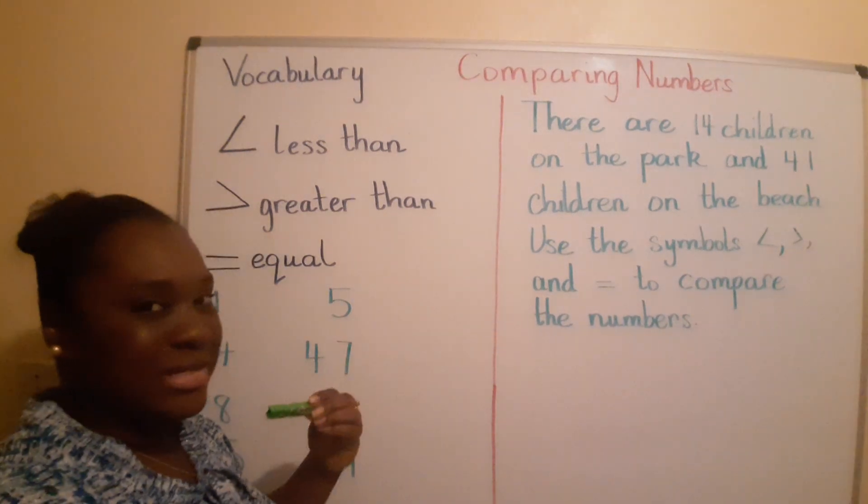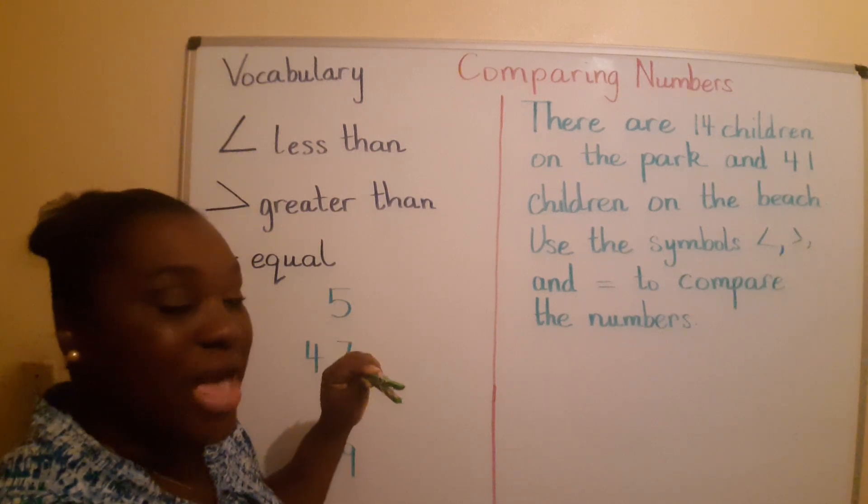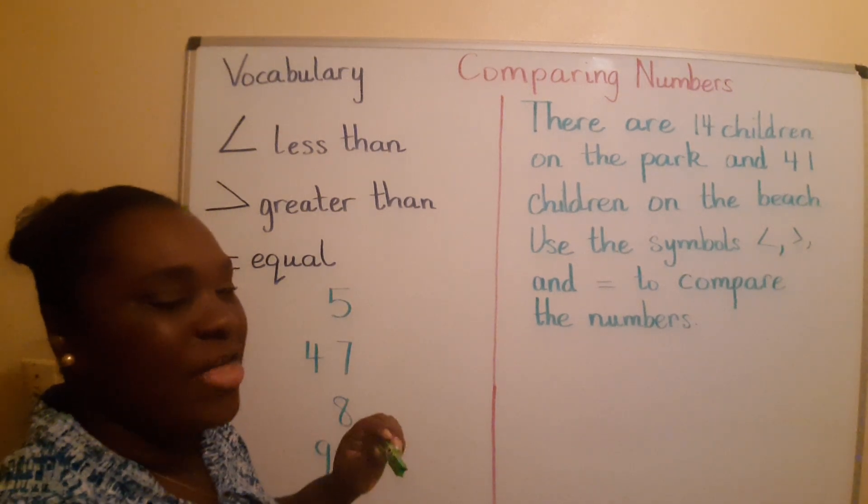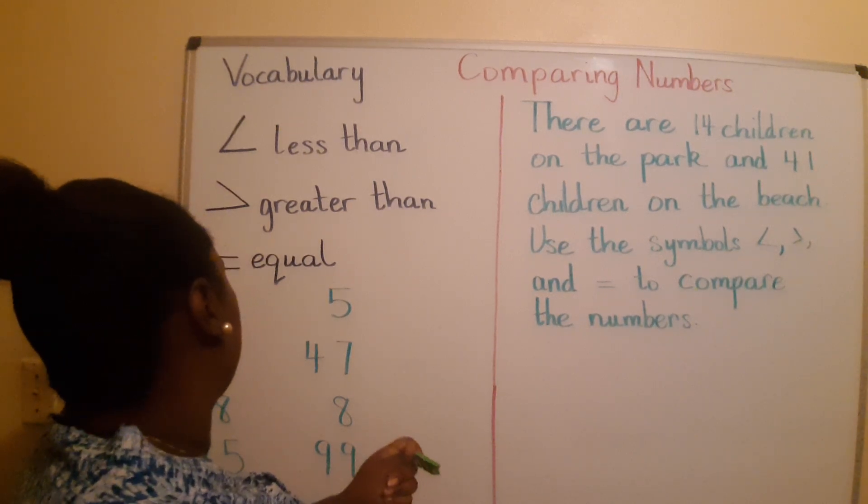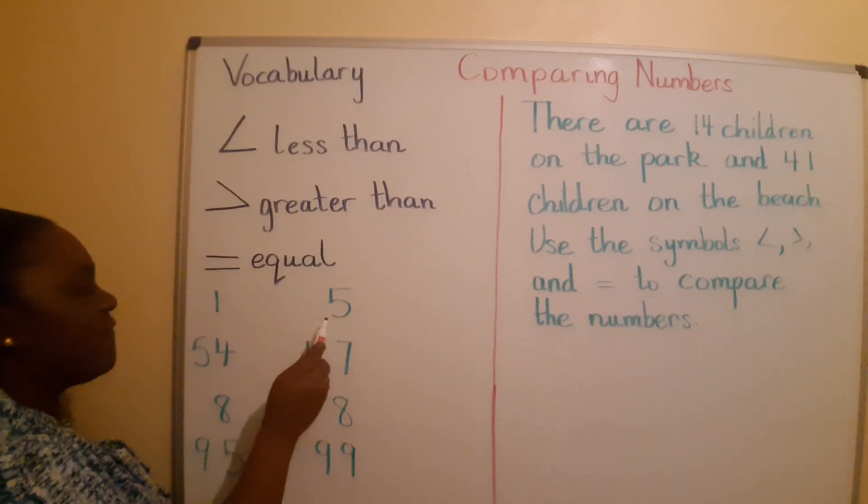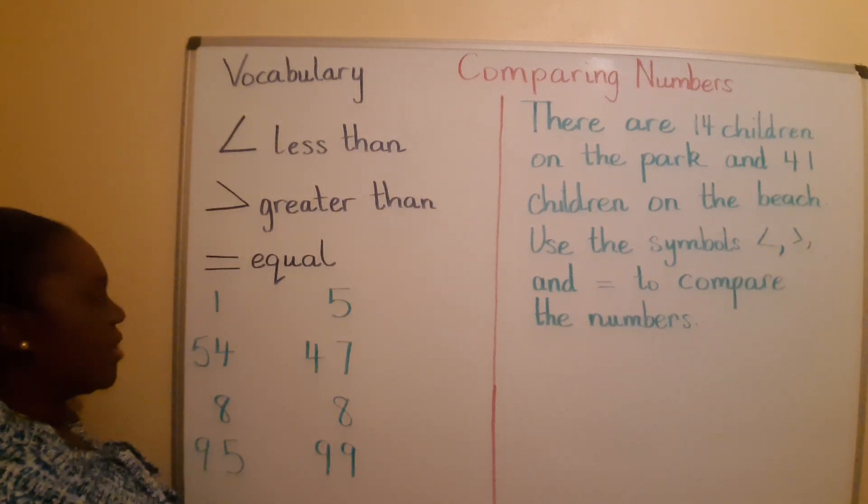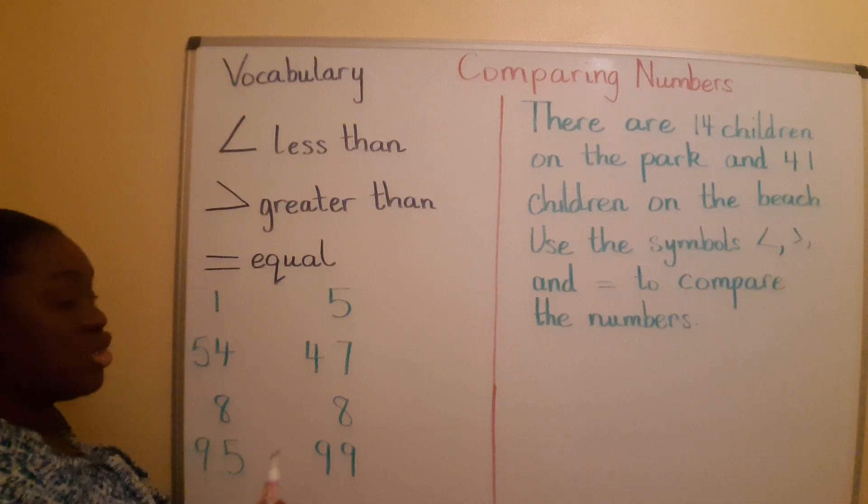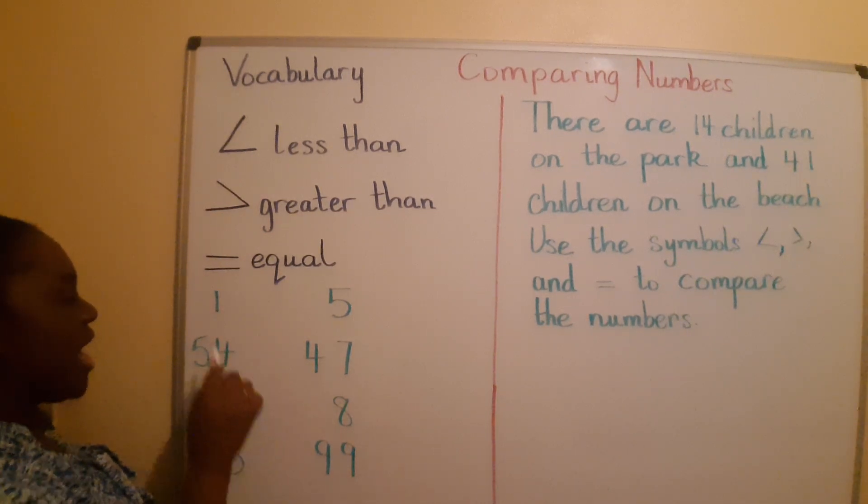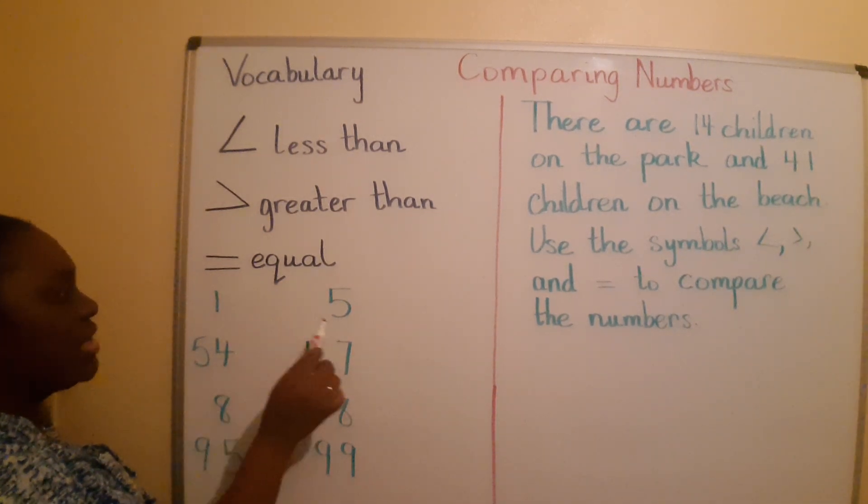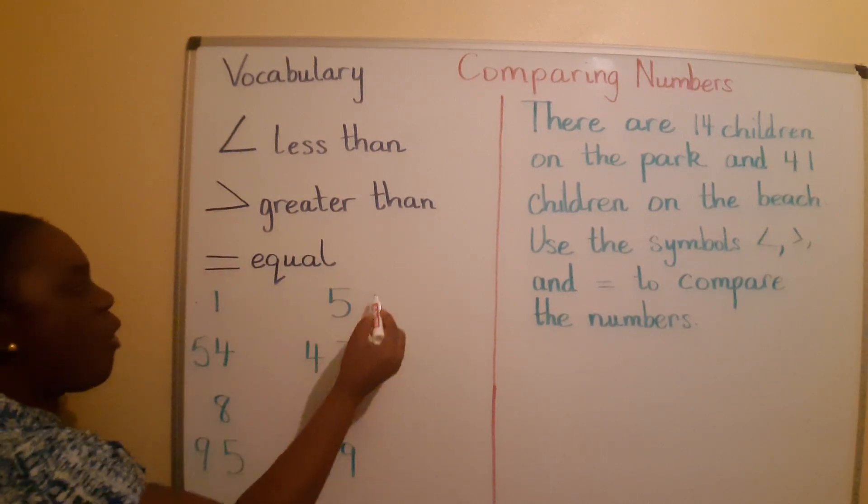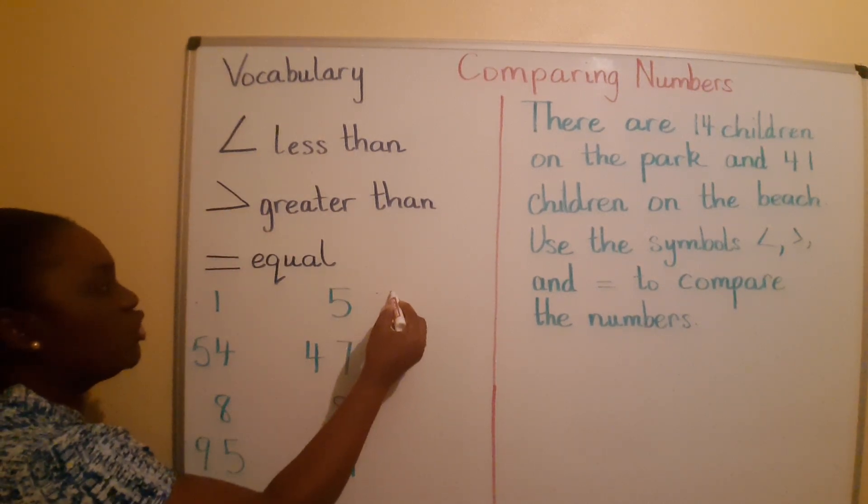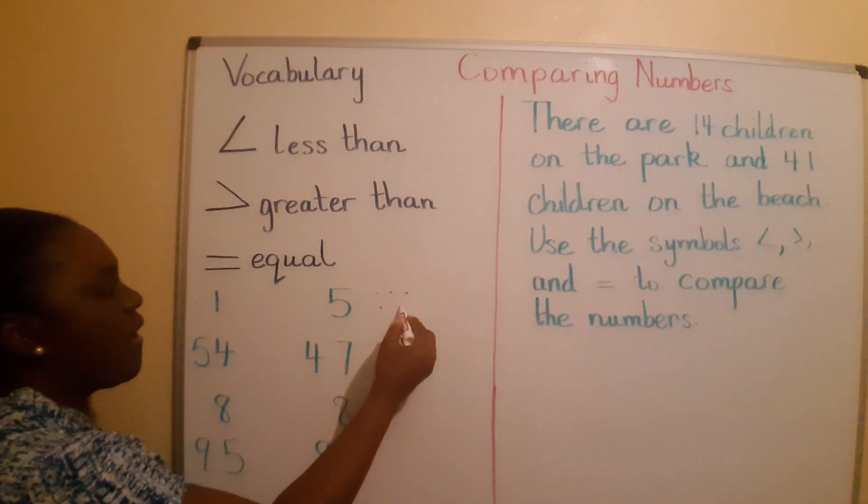And he always opens his mouth and eats that greater number. So let's see if we can help Al the alligator find the greatest number. Let's look at 1 and 5. Which number is greater? Which number is more? Is it the value of 1 or is it the value of 5? Think about it. Which one is greater? 1, 2, 3, 4, 5?